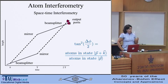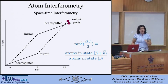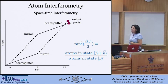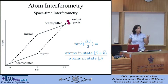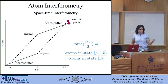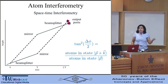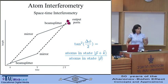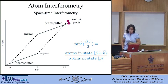You measure the phase shift by taking the ratio of the number of atoms in the state with increased momentum p plus k and with momentum p. If there is any difference in the physics that the two atoms see in their two trajectories, it will appear as a phase shift.